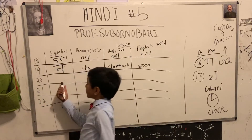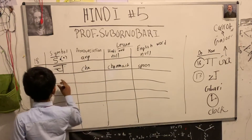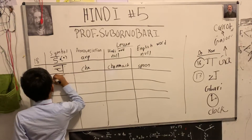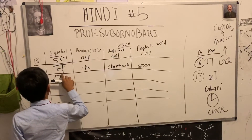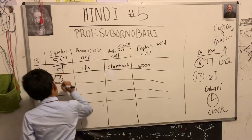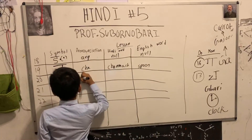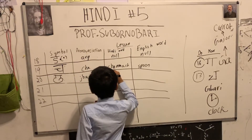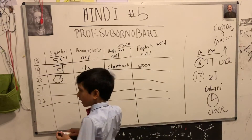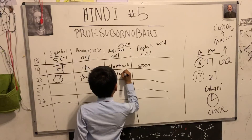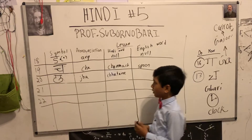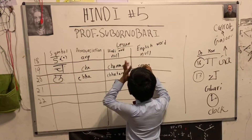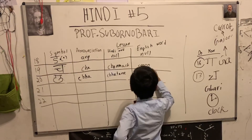For the 20th letter, we're going to look at this symbol. It's kind of tricky to write, but you'll get the hang of it. It's pronounced Cha. It is used in the word Chathari — or Chhata — which means umbrella. Cha, Chhata, umbrella.